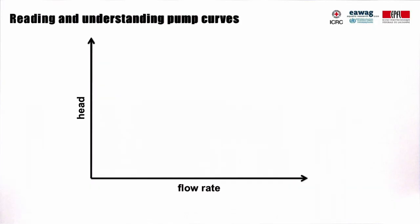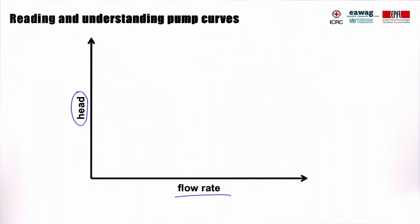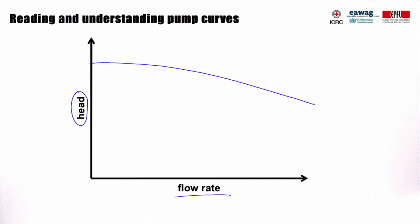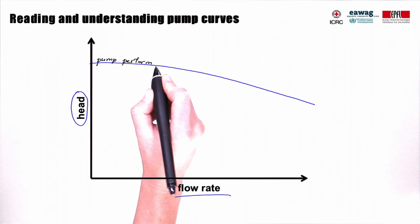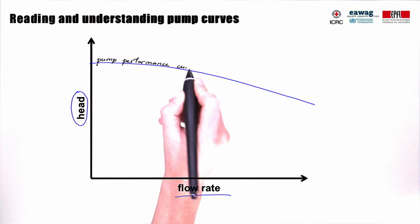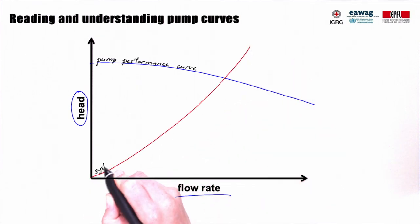That is why you need to read and understand pump curves if you need to choose and specify a centrifugal pump. A typical pump curve has two axes: the horizontal one showing flow rate through the pump, and the vertical one showing head, also sometimes called pressure. The first information we can read from any pump curve is the flow the pump will develop at any given operating head. This curve is also called the pump performance curve. Any piping system used to transport pumped water can be characterized by a head loss, which also depends on the flow rate of water in the system. Head loss will increase with flow rate. This red curve is called the system characteristics curve.